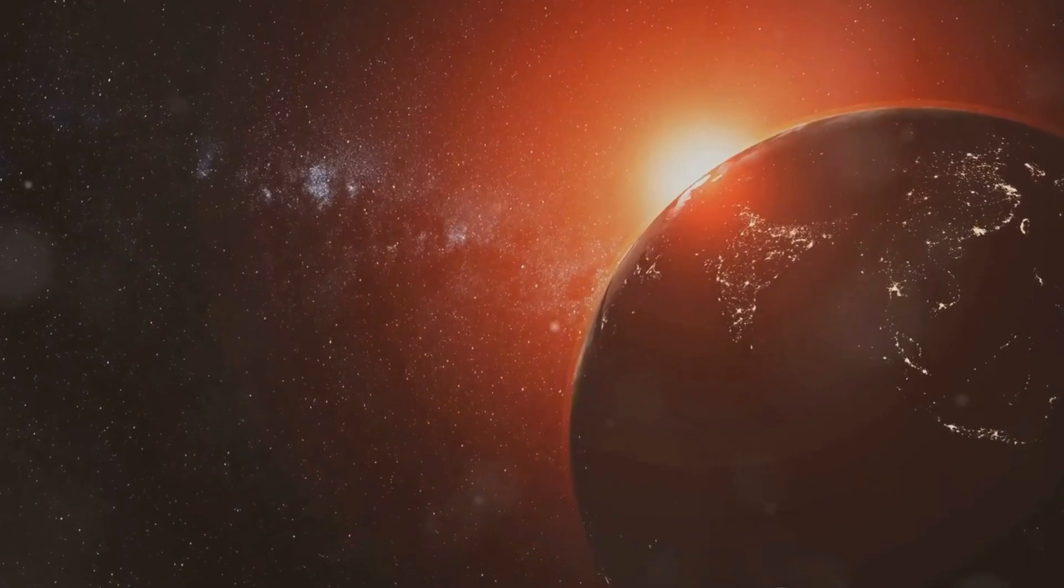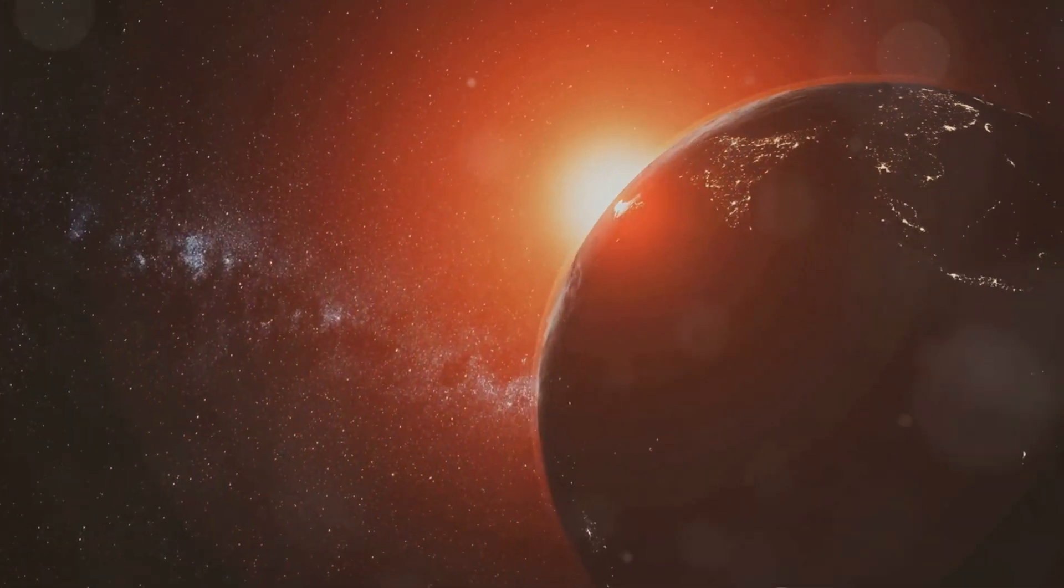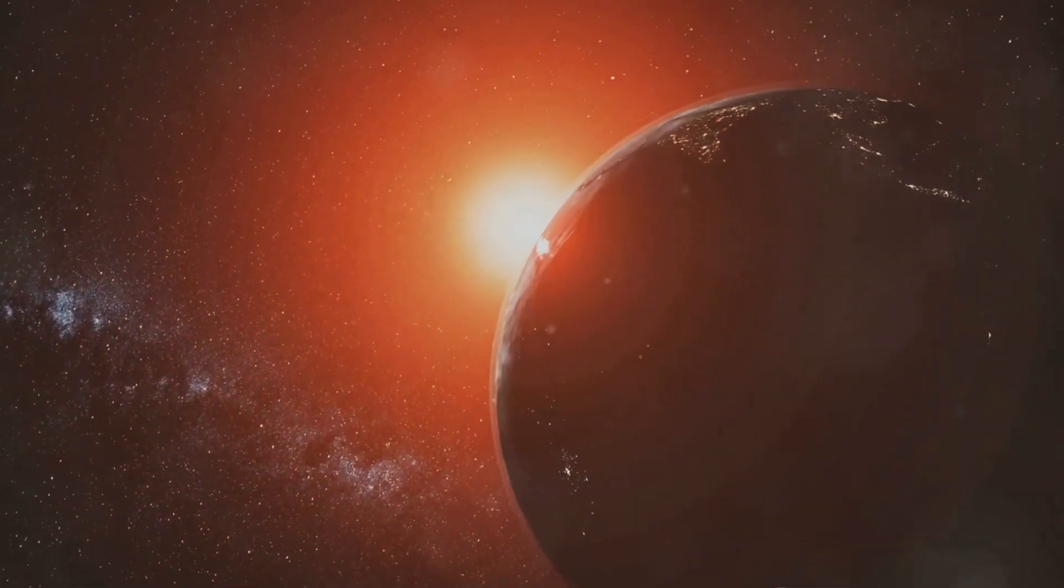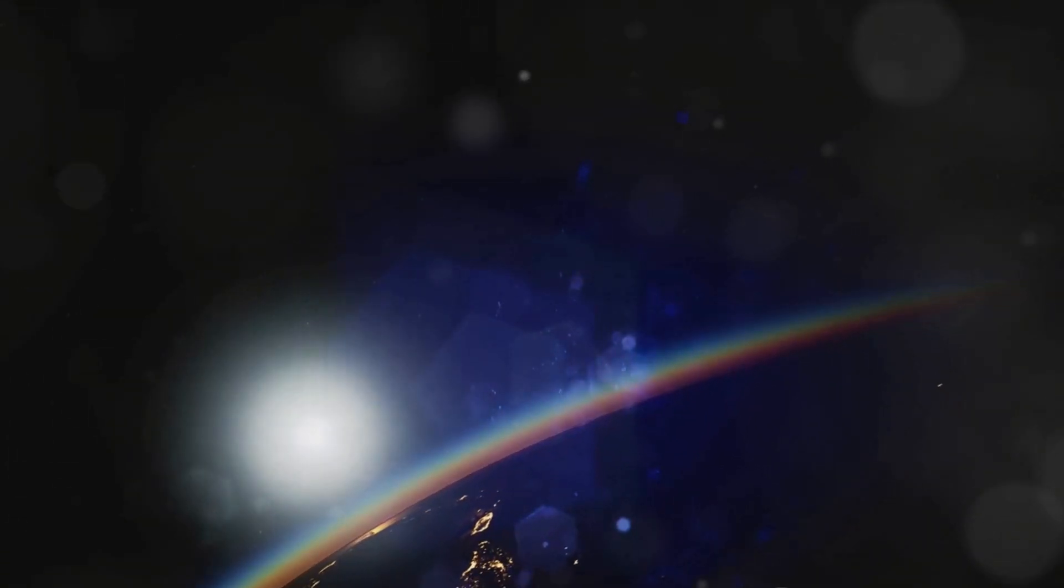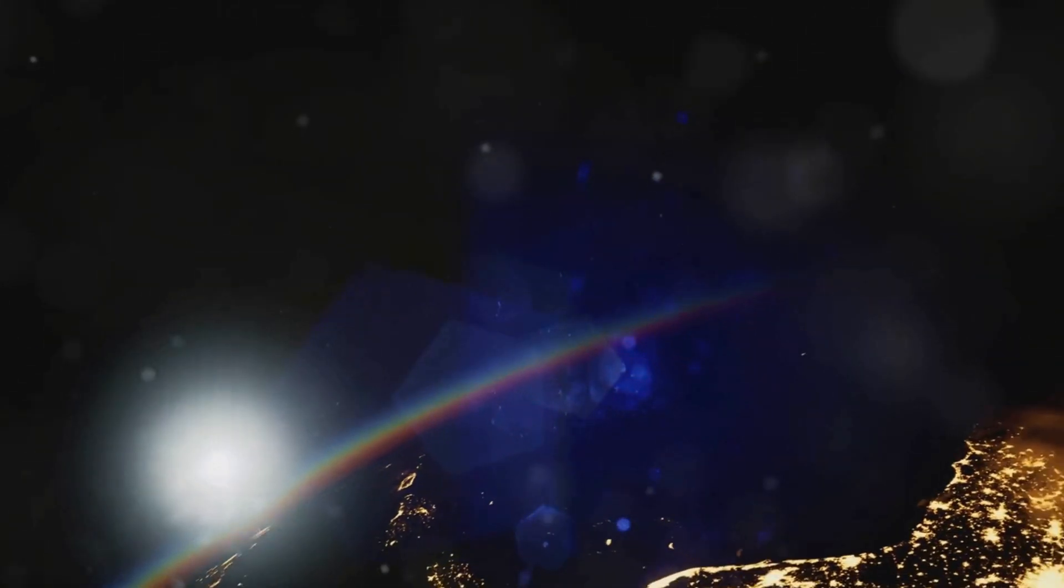Each planet in our vast solar system offers a unique spectacle when solar eclipses occur, painting a different landscape of shadows and light. On Earth, our blue planet, we're treated to a total solar eclipse approximately every 18 months.